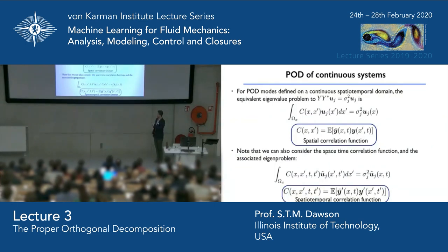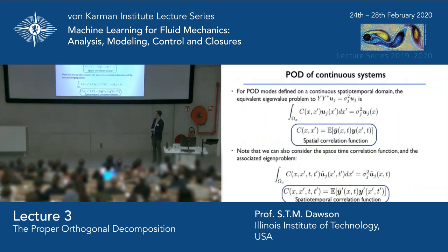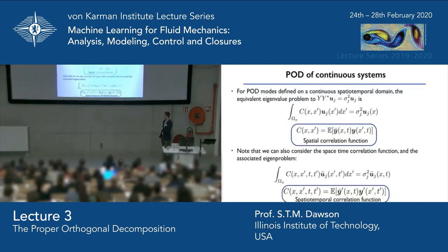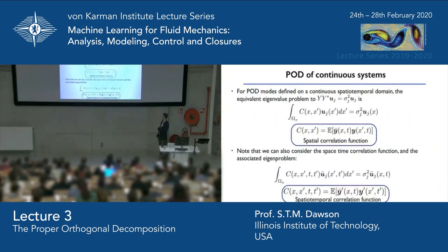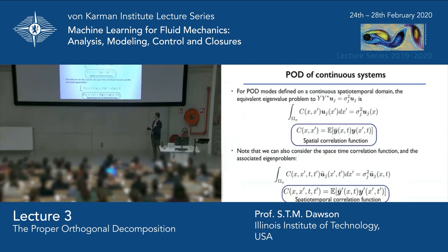This introduces a related problem: if we're computing the spatial correlation function, why not also include time and form a correlation tensor over all differences in both space and time? That leads to a generalized space-time eigenproblem. This connects back to a potential downside of POD — it didn't separate our different frequency components. Rather than just one time series, we might think of multiple realizations of the same system, treating it as a stochastic system from which we can obtain statistics.